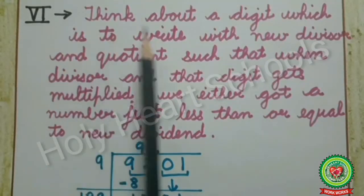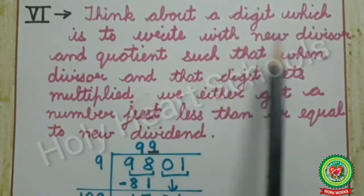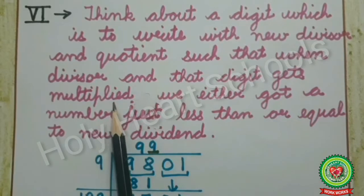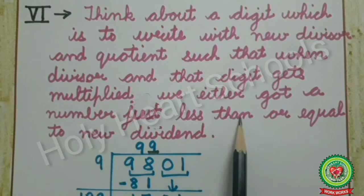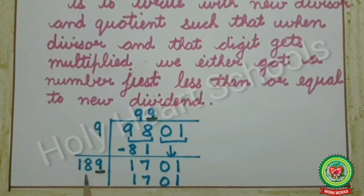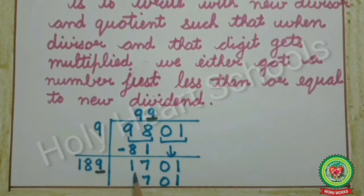The sixth step is to think about a digit to write with the new divisor and quotient such that when the divisor and that digit are multiplied, we get a number just less than or equal to the new dividend. Here our divisor is 18 and quotient is 9. We have to think about a digit to write with 18 and 9 such that when multiplied we get a number equal to 1701 or just less than 1701. While thinking, keep the last digit of the dividend in mind — here the last digit is 1.